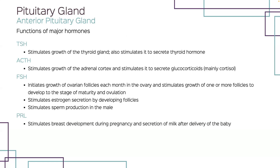The pituitary gland is a small but mighty structure. Although no larger than a pea, it really does have two glands, each a different type: the anterior pituitary gland and the posterior pituitary gland. The anterior pituitary gland secretes several major hormones. TSH, the thyroid-stimulating hormone, acts on the thyroid gland — as its name suggests, it stimulates the thyroid gland to increase secretion of thyroid hormone. ACTH, or adrenocorticotropic hormone, acts on the adrenal cortex, stimulating it to increase in size and secrete larger amounts of its hormones, especially larger amounts of cortisol.